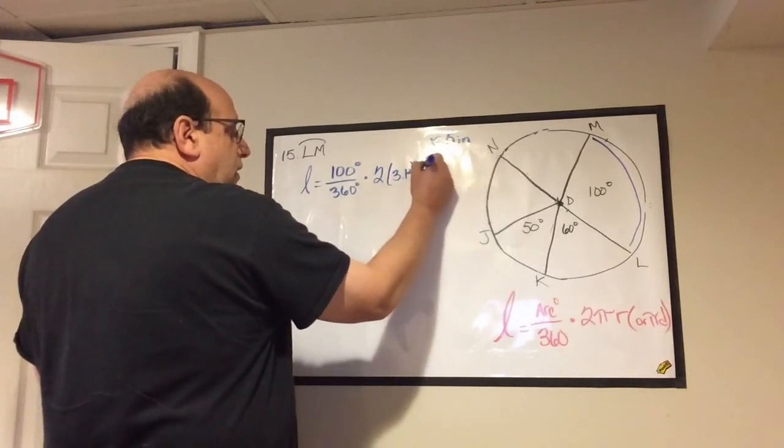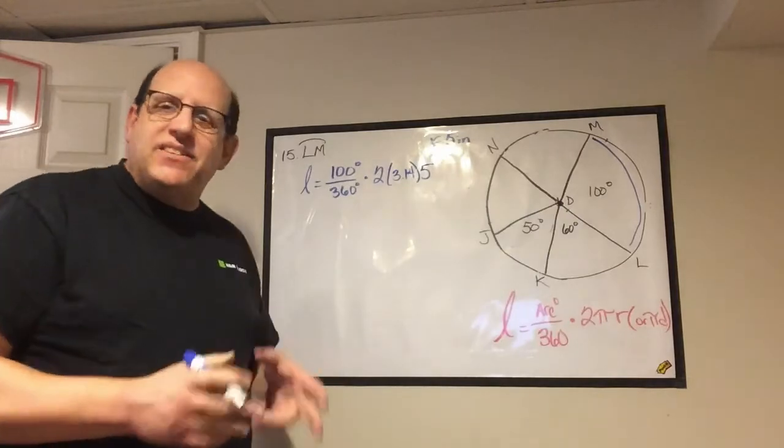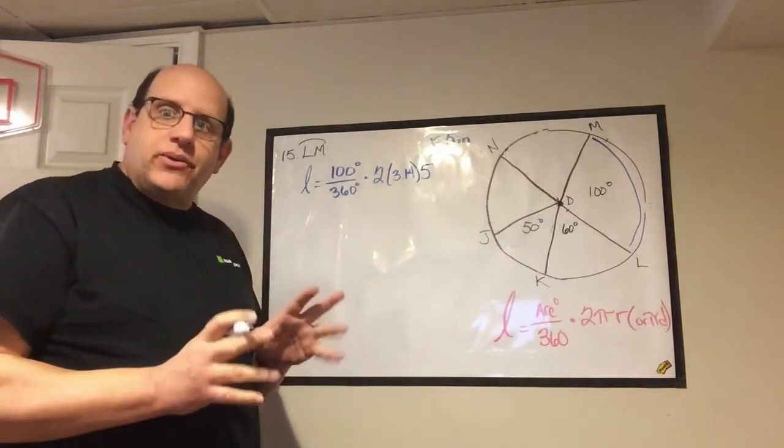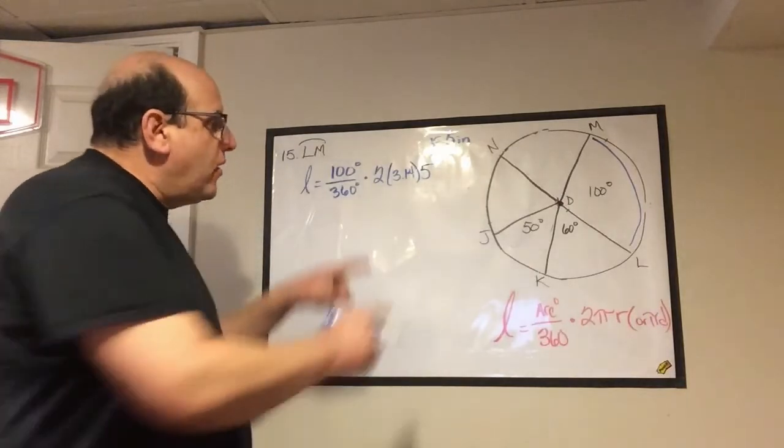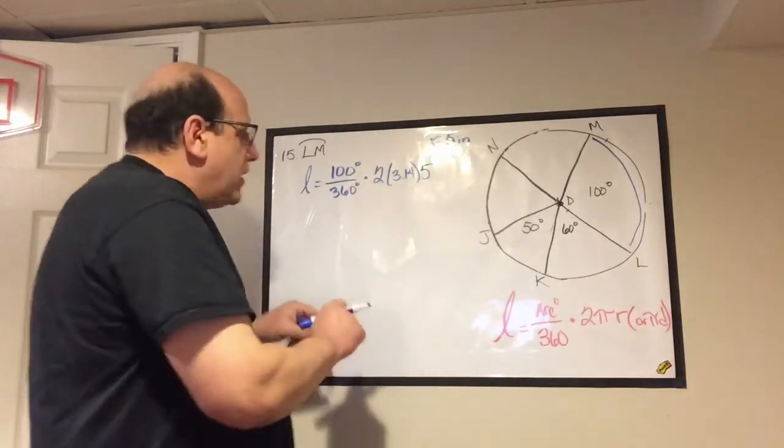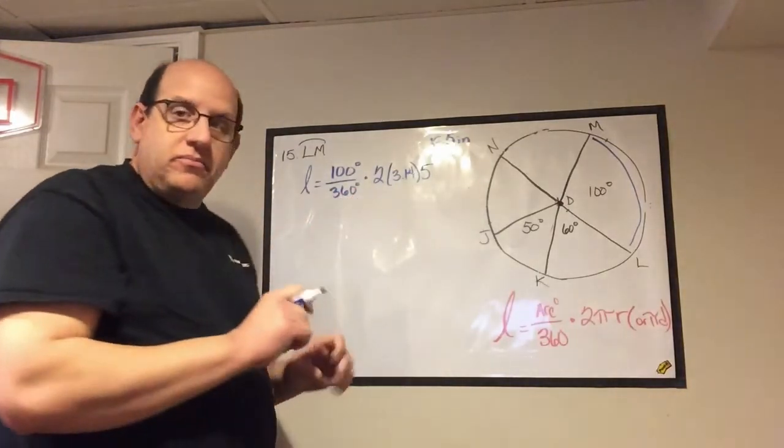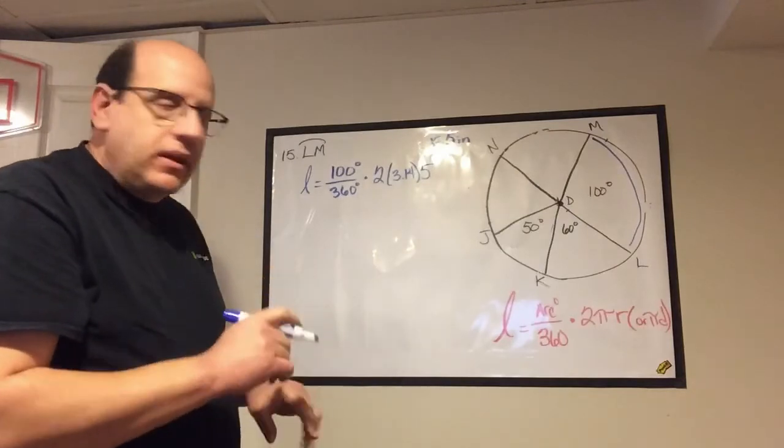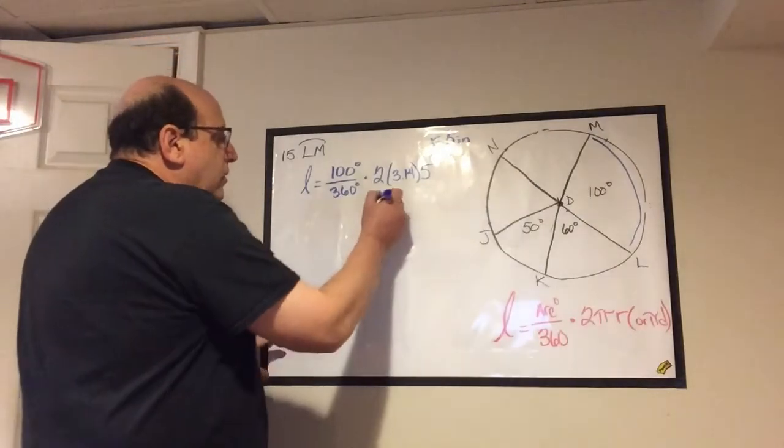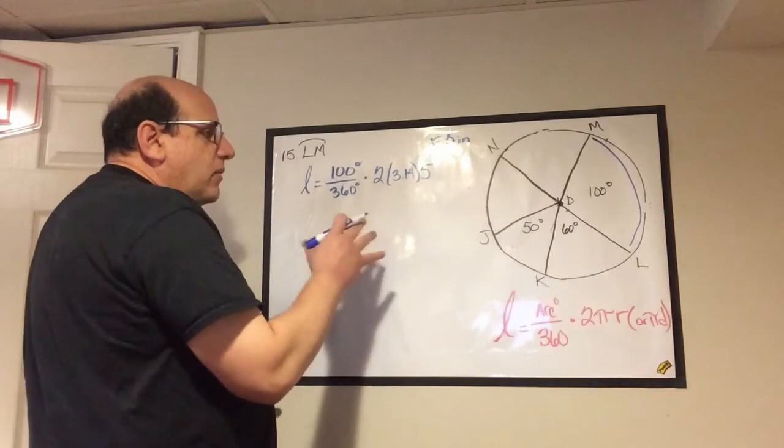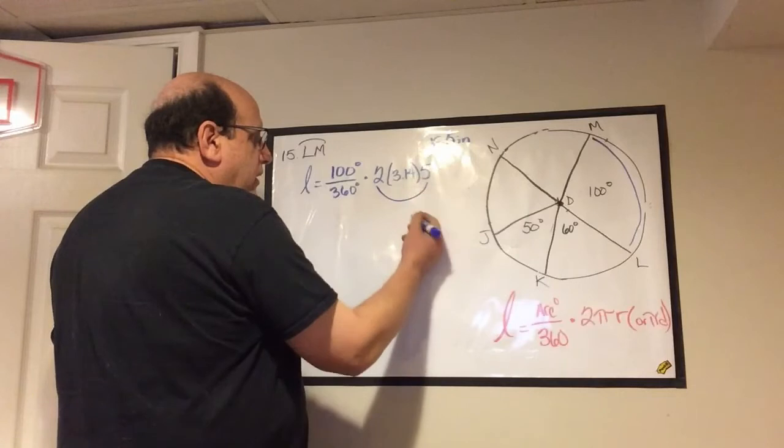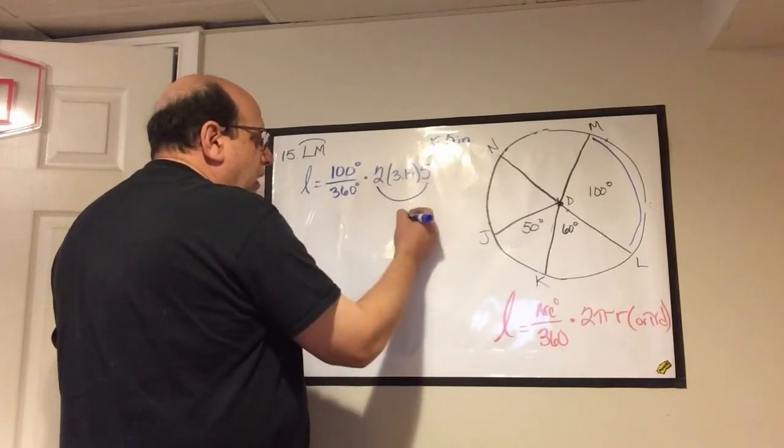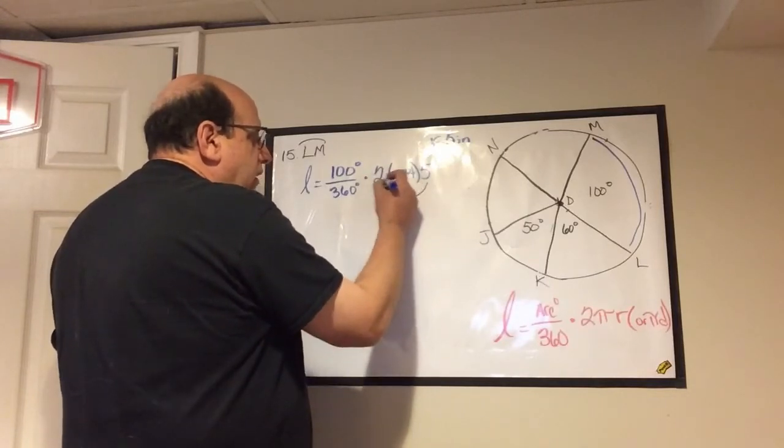We did this yesterday, so we can sort of cheat, except the ratio's different. I know this answer, but I don't know that answer, but it'll be a little bit easier. The first thing that I always do is simplify this, and I know that two times five is ten.